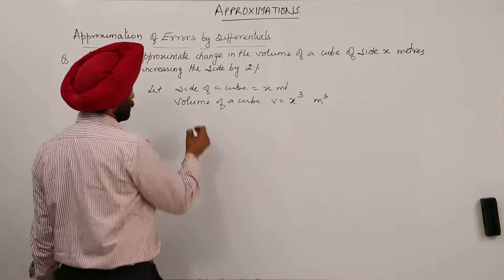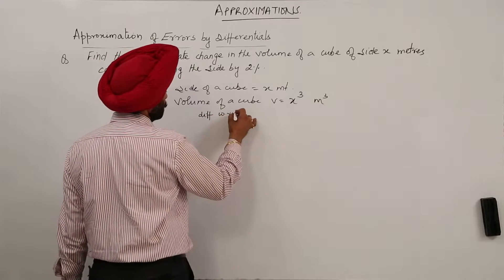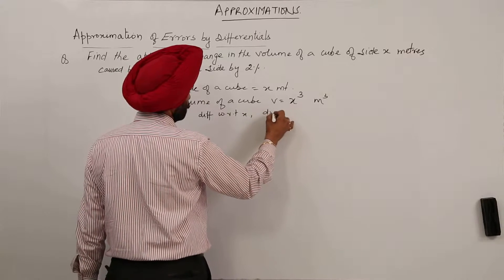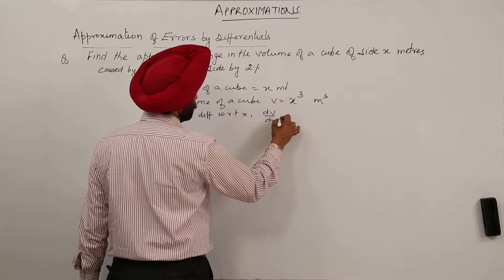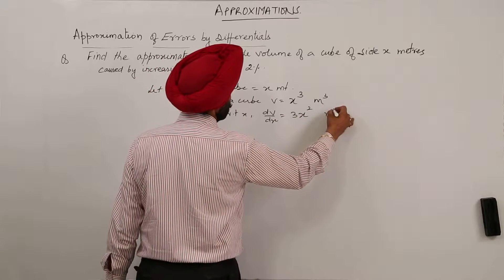Now, differentiating with respect to x we get dv by dx is equal to 3x square meter cube.